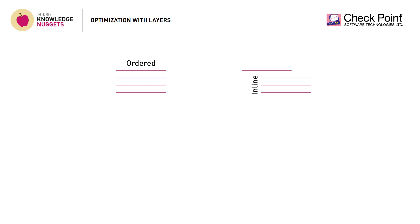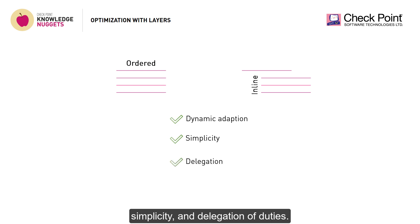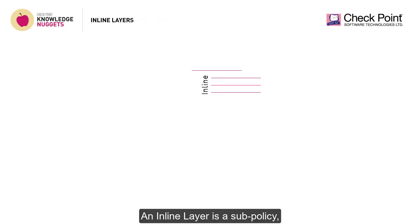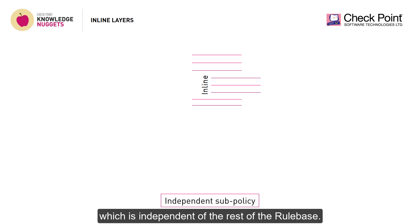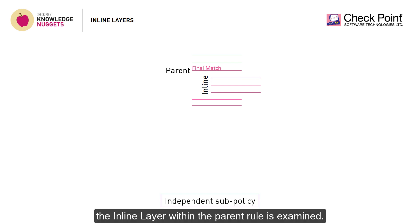Let's first focus on ordered layers and inline layers. Policy layers allow dynamic adaptation of security needs, simplicity, and delegation of duties. An inline layer is a sub-policy which is independent of the rest of the rule base. It is comprised of a parent rule which defines certain criteria just like a regular rule. When the rule base reaches a final match on the parent rule, the inline layer within the parent rule is examined.